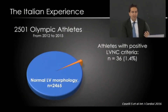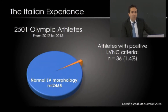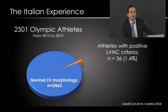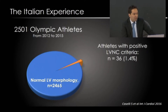At the Institute of Sports Medicine and Science in Rome, we conducted a study to evaluate the prevalence and clinical characteristics of individuals with hyper-trabeculation. From 2012 to 2015, we evaluated 2,500 Olympic athletes who underwent a complete cardiovascular evaluation including echocardiography. Thirty-six athletes had positive criteria on echocardiography, corresponding to 1.4% of the athletic population.